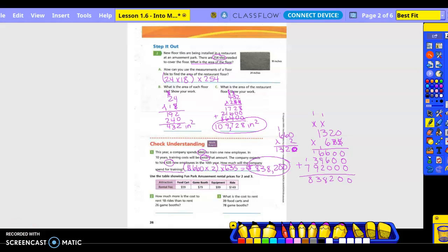Use the table showing Fun Park amusement rental prices for two and three. How much more is the cost of 18 rides than 26 games? So 18 rides times $149. And then they want to know how much more, so what do we need to do first? 149 times 18. 8 times 9 is 72, put the 2 carry the 7. 8 times 4 is 32 plus 7 is 39, carry the 3. 8 times 1 is 8 plus 3 is 11. Mark off and put a 0. 1 times 9 is 9, 1 times 4 is 4, 1 times 1 is 1. Add it. 2, 18 carry the 1, 6, 2. So $2,682.